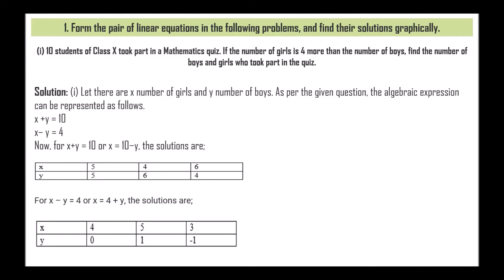The first question is: form the pairs of linear equations in the following problems and find their solution graphically. Ten students of class 10 took part in a mathematics quiz. If the number of girls is 4 more than the number of boys, find the number of boys and girls who took part in the quiz. Let there be x number of girls and y number of boys. The algebraic expressions can be represented as x + y = 10 and x - y = 4.